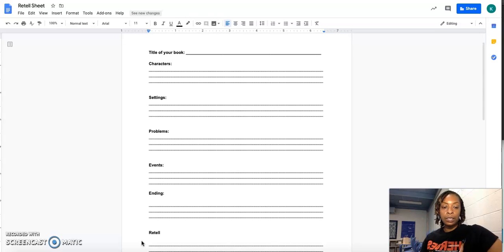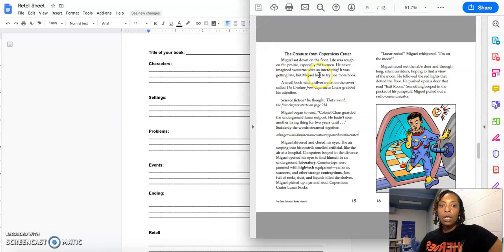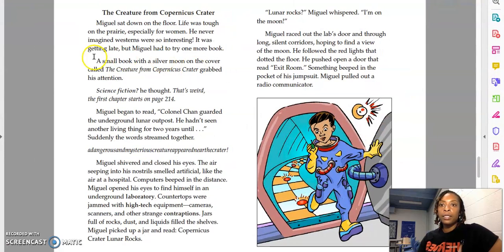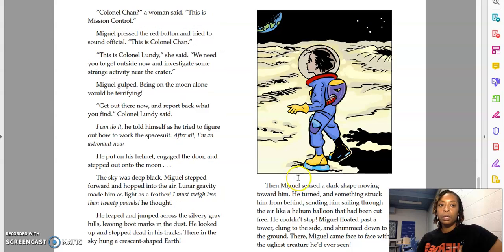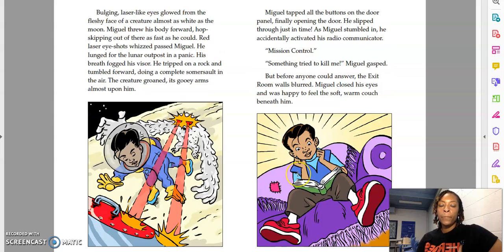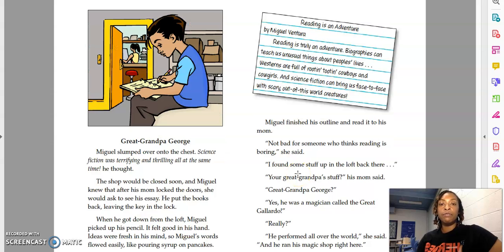So for today, you have two retell sheets. You are going to finish our Miguel series. I really enjoyed this series, and I know you all probably did too. So the first story is the creature from Copernicus's crater. So this is one of the longer stories here. Okay, so you're going to complete a retell for that.